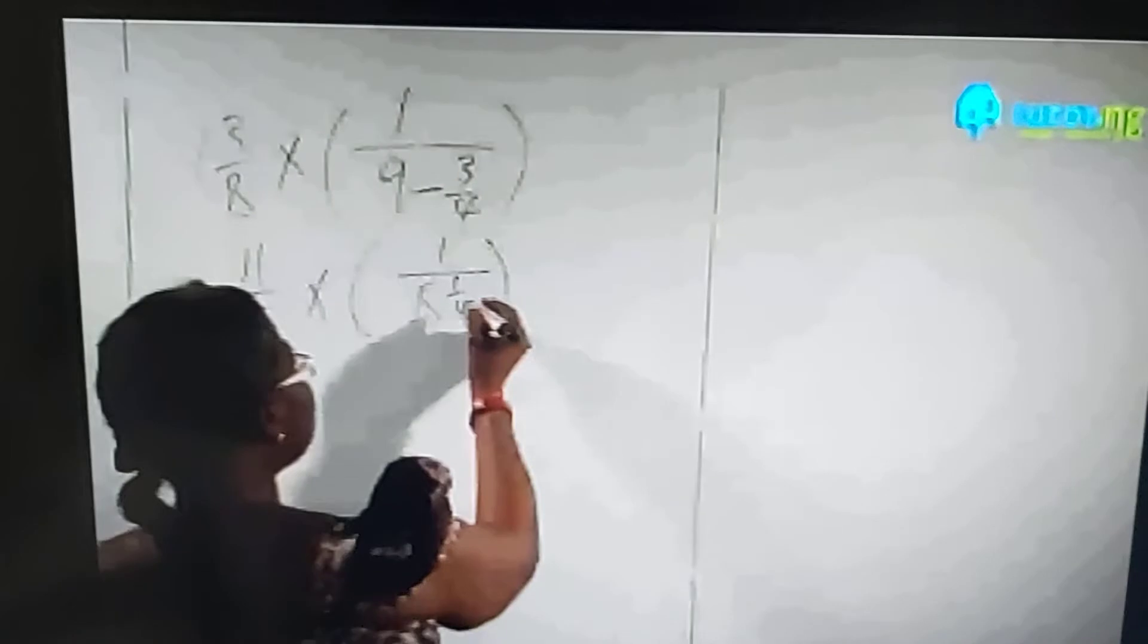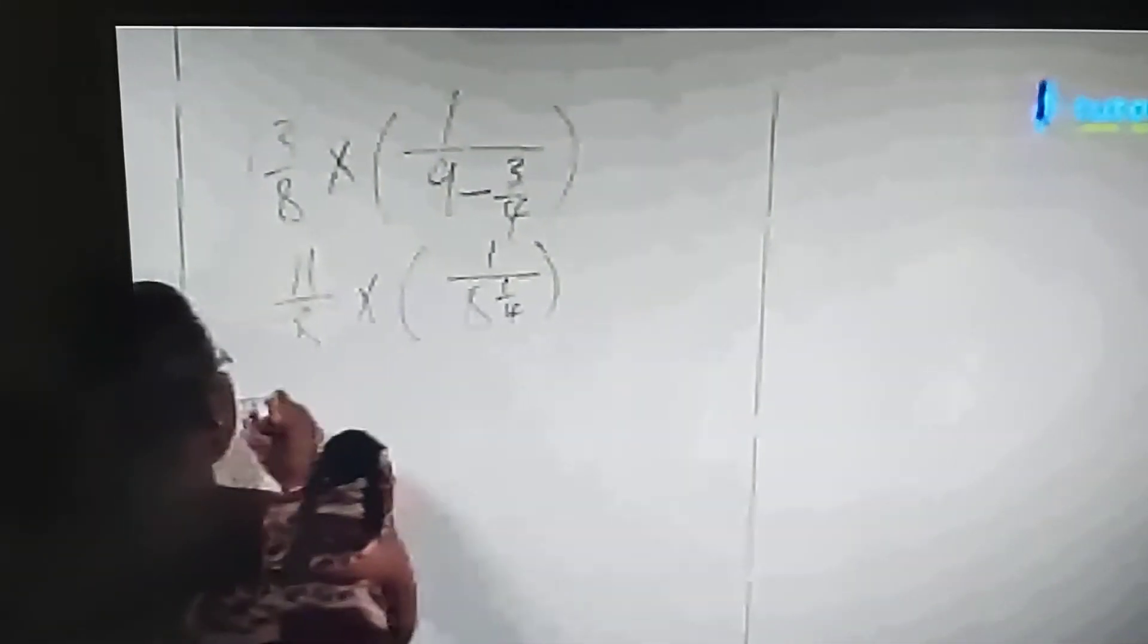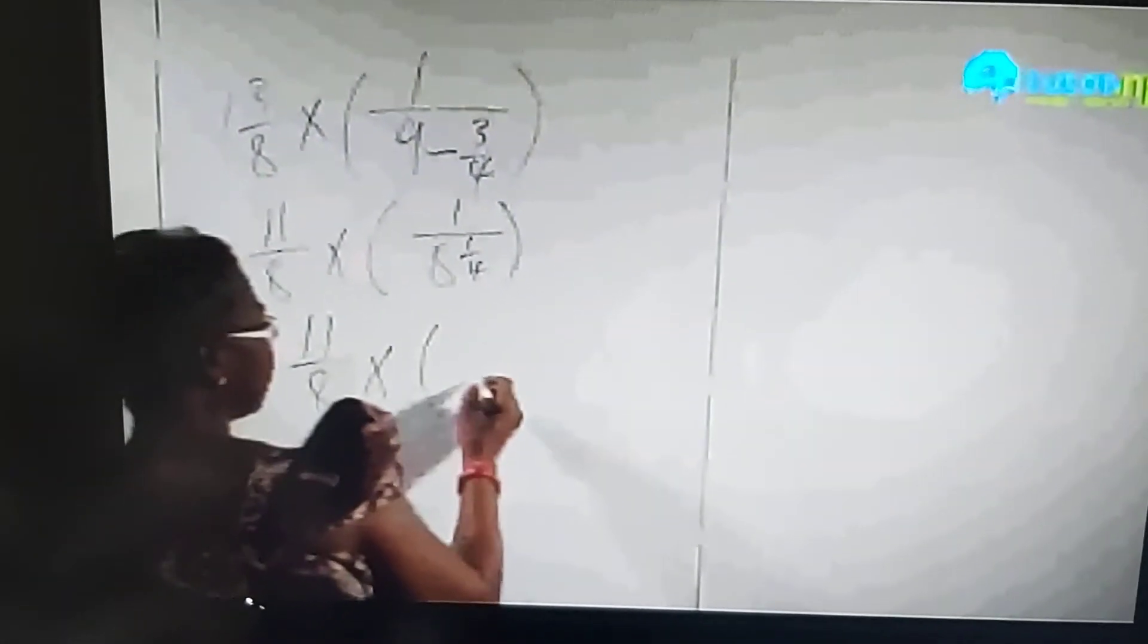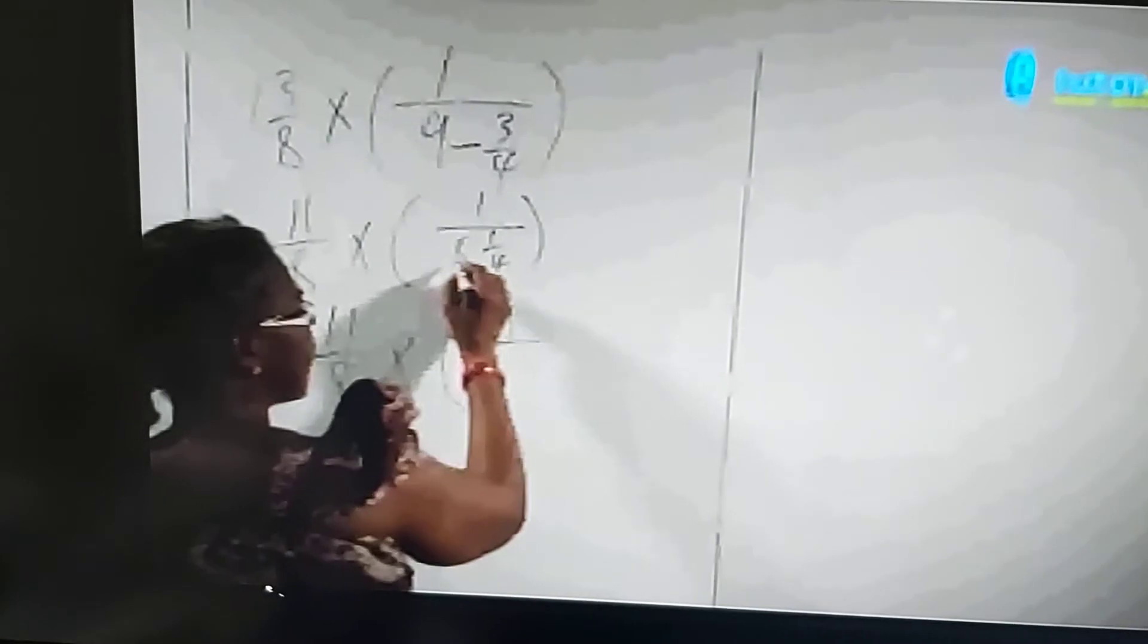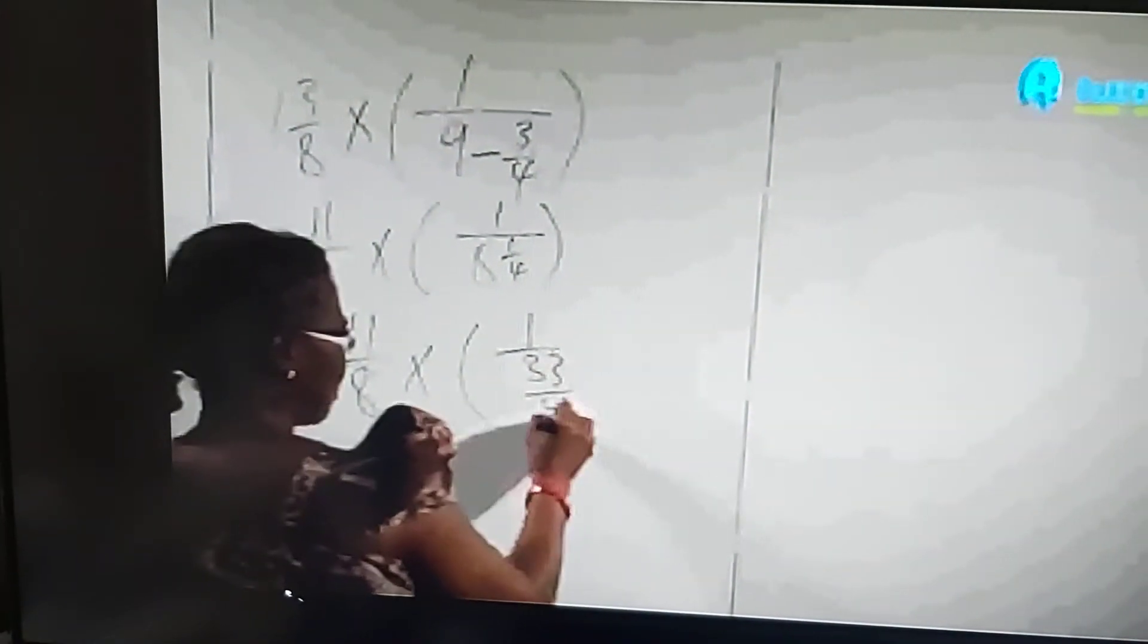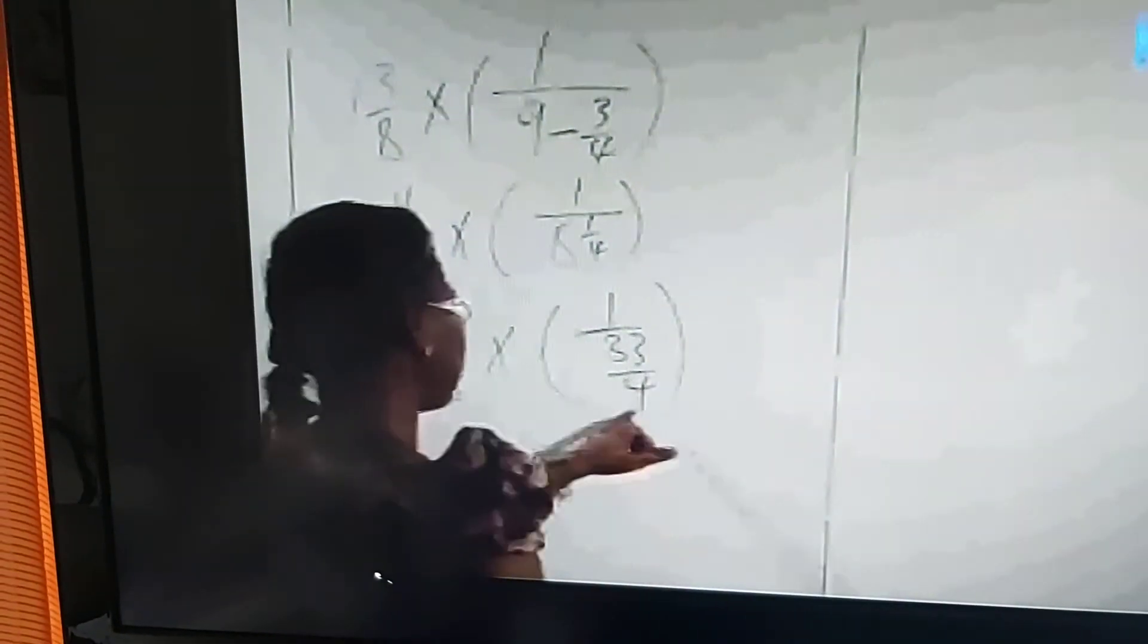Four times eight is 32, plus one is 33, so 33/4. One over simply means reciprocal, which means turn it upside down. So we have 11/8 times 4/33. What we've done is remove the brackets.